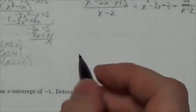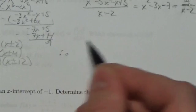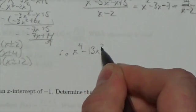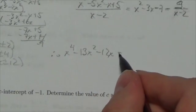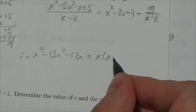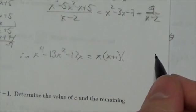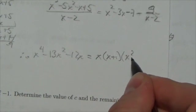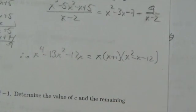So now I can rewrite this expression. Therefore, I know that x^4 - 13x^2 - 12x can be written as x times (x + 1) times (x^2 - x - 12).